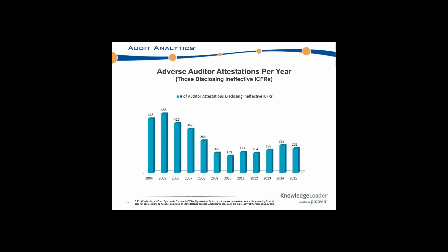This chart shows the adverse auditor attestations per year — companies disclosing ineffective internal controls over financial reporting. The largest number of adverse attestations was 448, which occurred in 2005, the first full year of implementation. The 448 number in 2004 is also interesting because only companies with a fiscal year end after November 15th had to have an auditor attest to their internal controls. There was a steady decline down to 2010, where we bottomed out at only 139 companies with an adverse auditor attestation.